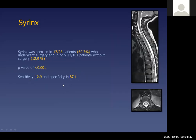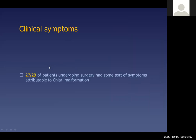The last parameter studied was the syrinx itself as a predictor for surgery. We found that 60.7% of patients with a syrinx underwent surgery with a p-value less than 0.001 and sensitivity of about 87.1%. These are the key radiographic criteria.